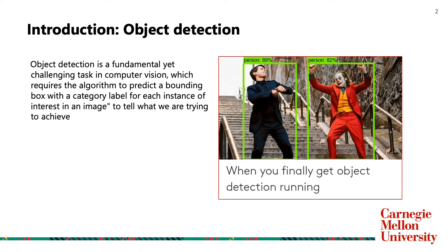Object detection is a fundamental yet challenging task in computer vision which requires the algorithm to predict bounding boxes with a category label for each instance of interest in the image to tell what we're trying to achieve.